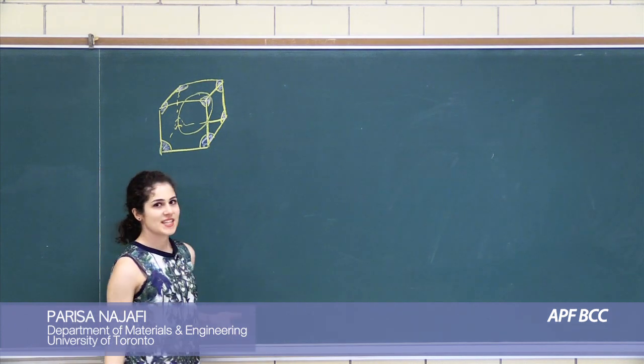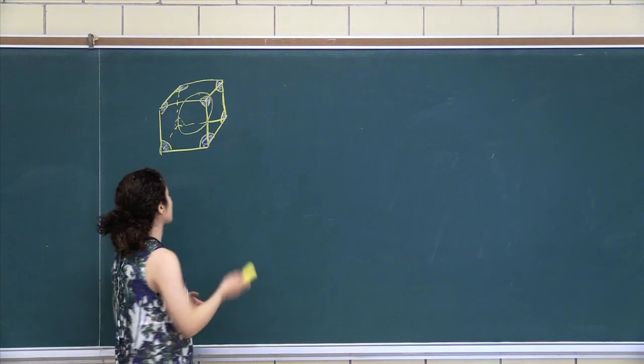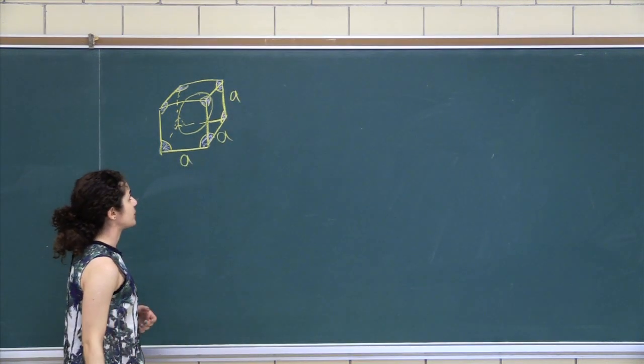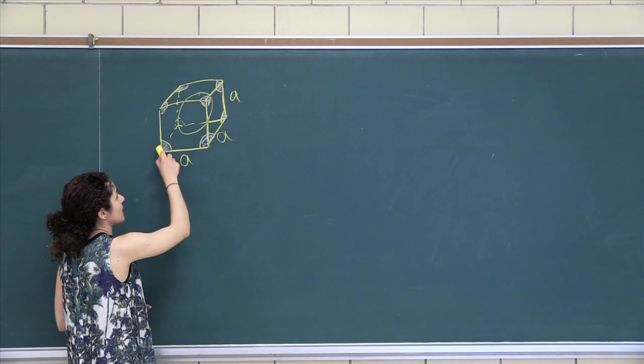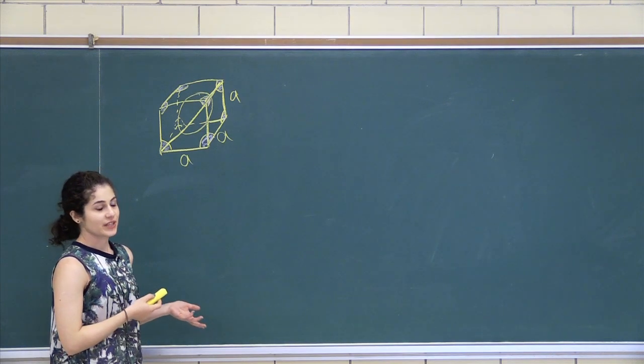So to find the atomic packing factor, again, we want to relate the R to the A. And the A's are all on the side, they're all equal. And what we can see is that along the body diagonal, the atoms are touching.